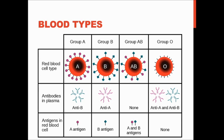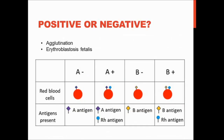If you had O positive blood, you could receive blood from O positive or O negative. If you were A positive, you could receive from A positive, A negative, O positive, O negative, AB positive, or AB negative. If you receive blood from an incompatible blood type, it undergoes a process called agglutination — your blood cells clump together, which is more life-threatening than normal clotting because of the inability to travel through the body.